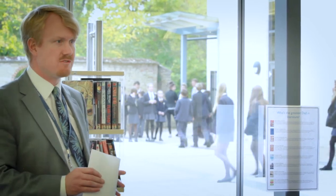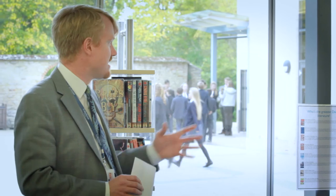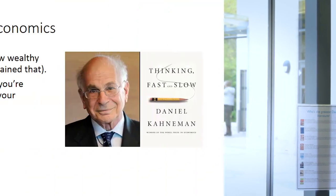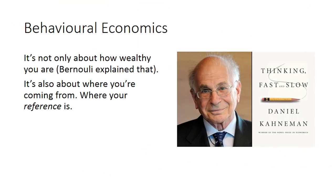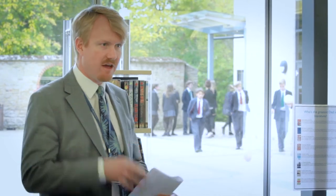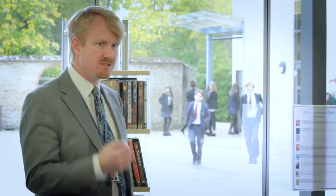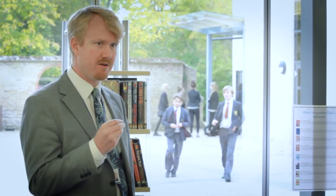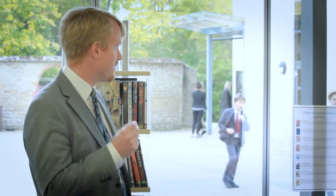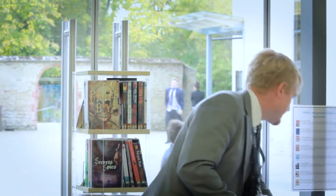Let's stop thinking about ourselves purely in terms of rational choices, and think about what other things influence whether we go for the safe or risky option. It's not just about how much money you have or the diminishing marginal utility of wealth — it's also about where you're coming from. And that's what Daniel Kahneman's big breakthrough was in the late 1970s.